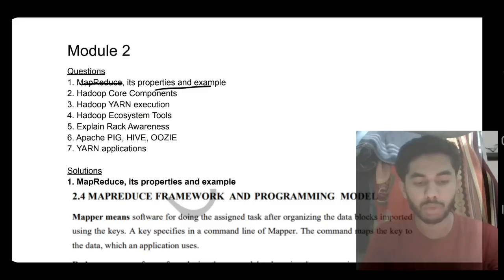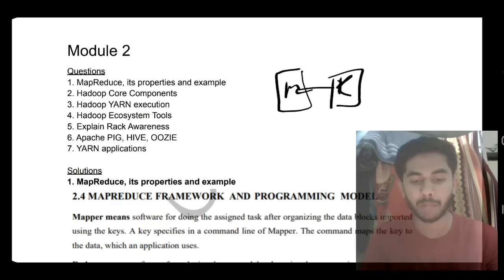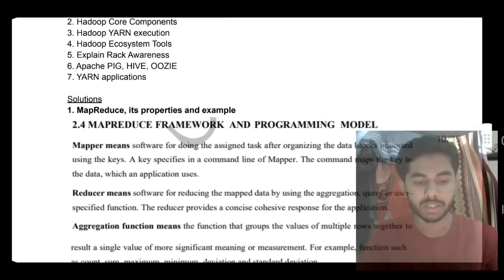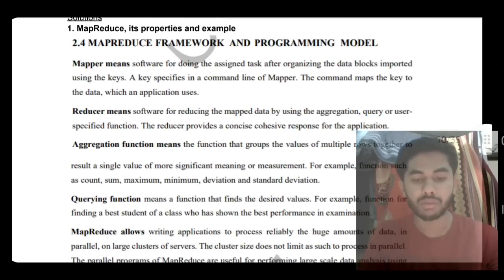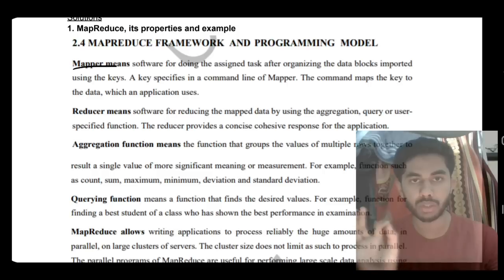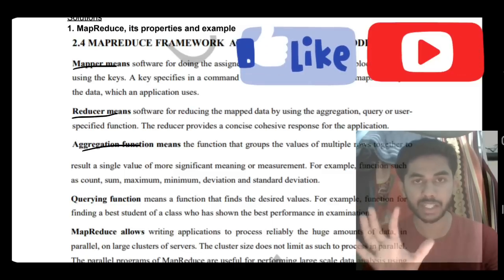The first question is MapReduce, its properties, and an example. What is MapReduce? The better term to understand is that we are mapping something and then reducing something. First, you have to define the following terms: Mapper means mapping from one object to another object with key-value pairs. Reducer means reducing the complexity of the maps through aggregation, which is grouping things, and querying means finding out something.